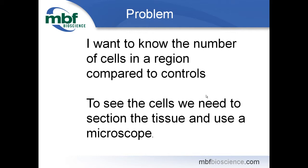The problems that arise for us is this is brain tissue and we have to section it and put it up on a microscope. When you section through the tissue you're going to destroy cells, and when you look at cells under the microscope you're going to tend to be looking at pieces of cells. A lot of people think about counting pieces of cells or cell profiles when they're facing this problem of whether the number of cells has changed between control and experimental animals.